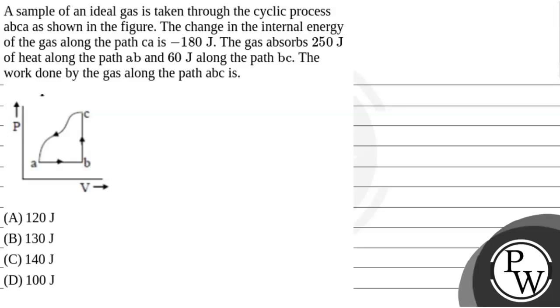Now, let's read the question. The question is: a sample of an ideal gas is taken through the cyclic process ABCA as shown in the figure. The change in the internal energy of the gas in the path CA is minus 180 J. The gas absorbs 250 J of heat along the path AB and 60 J along the path BC. Then, the work done by the gas along the path ABC is.